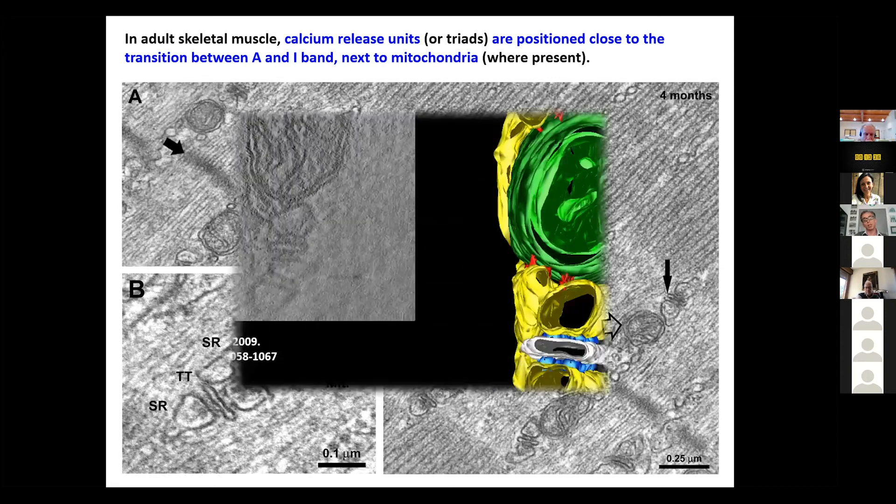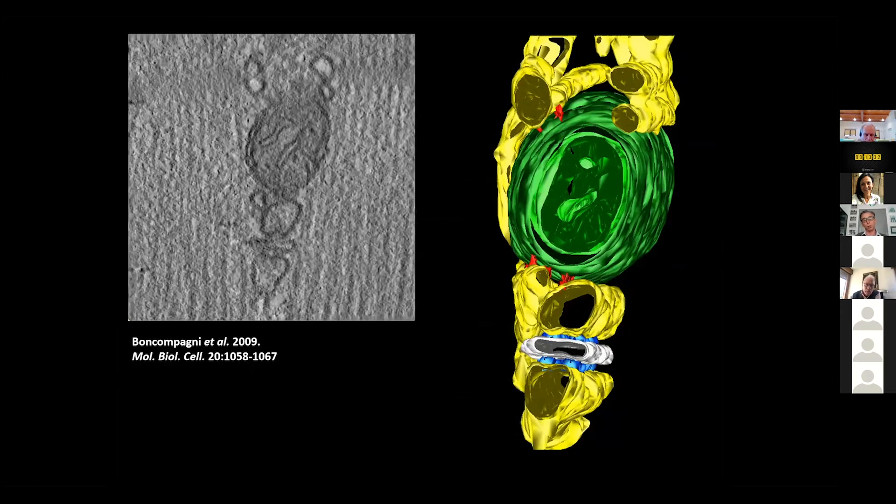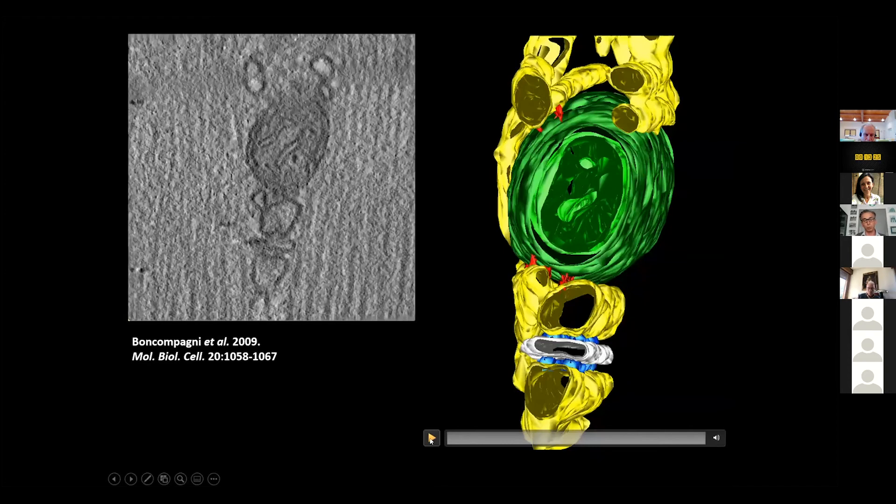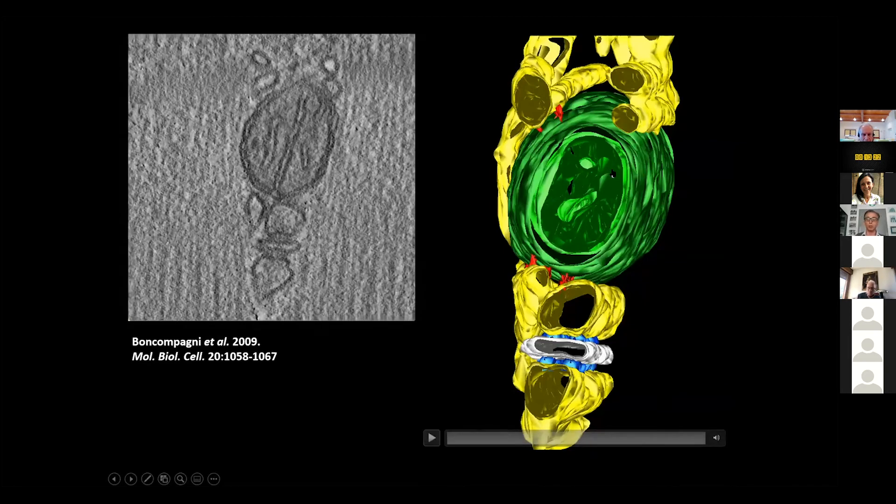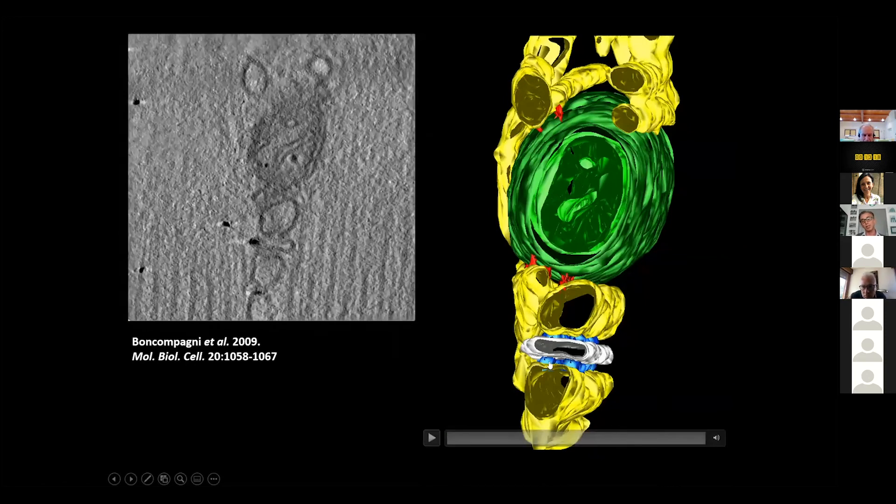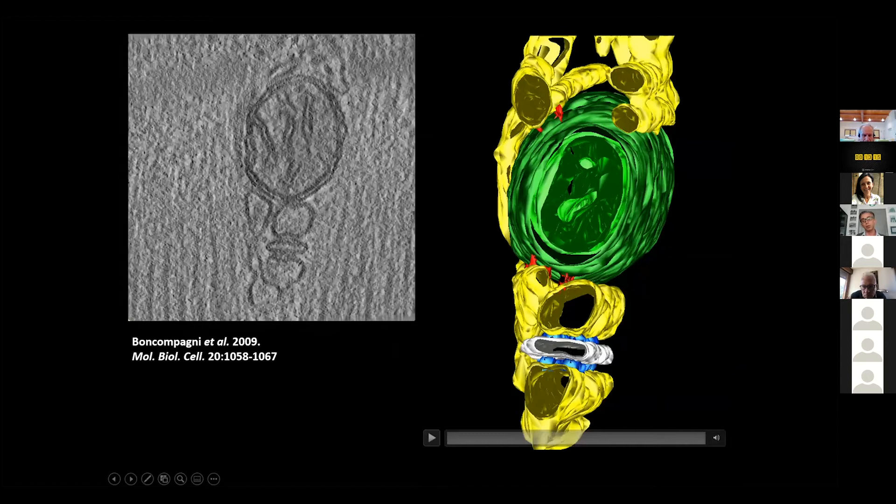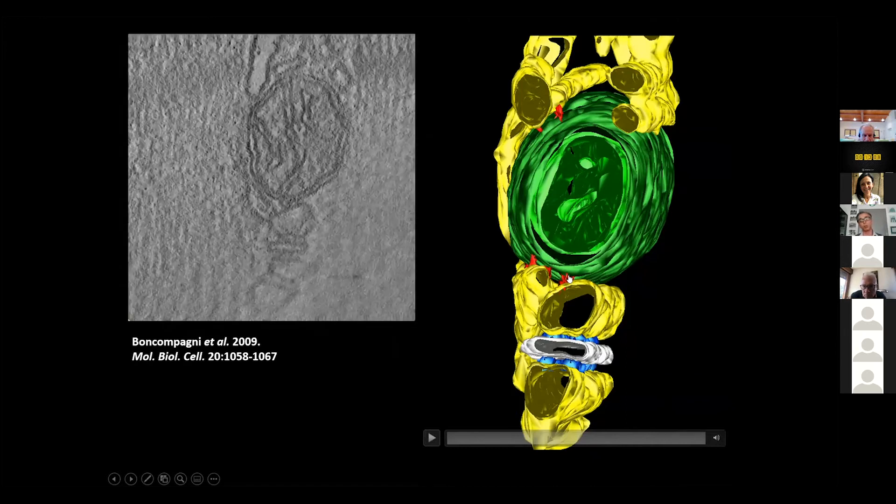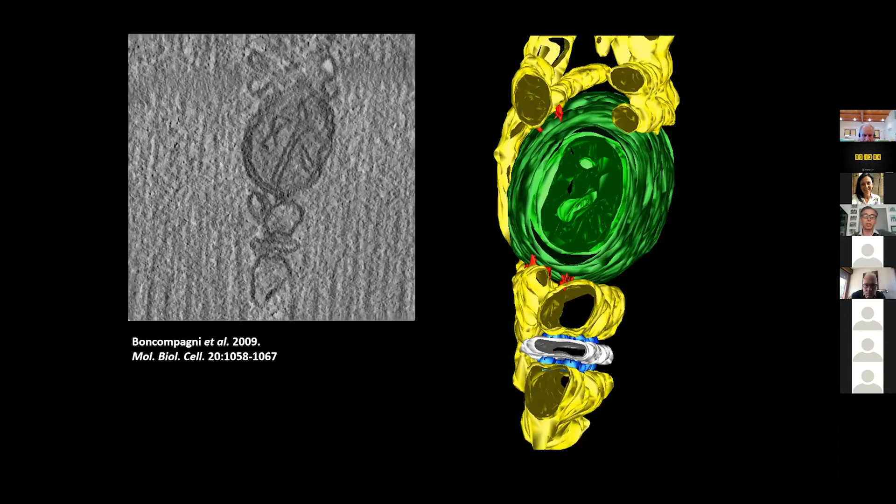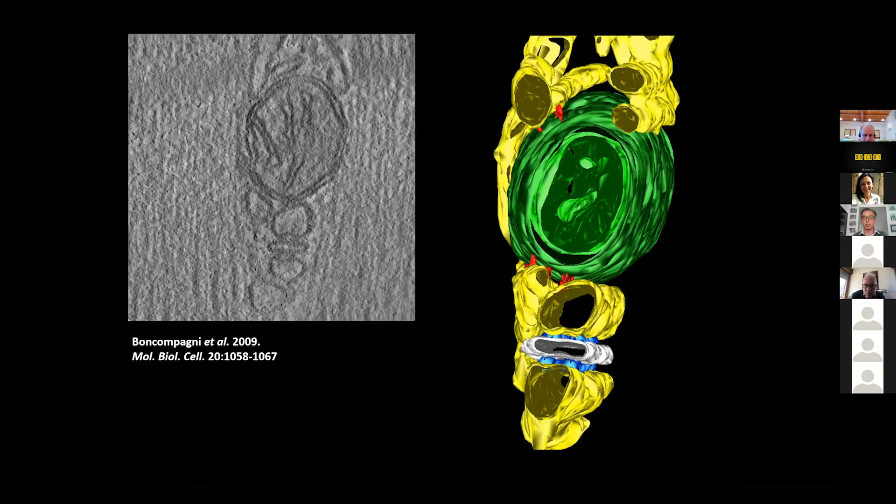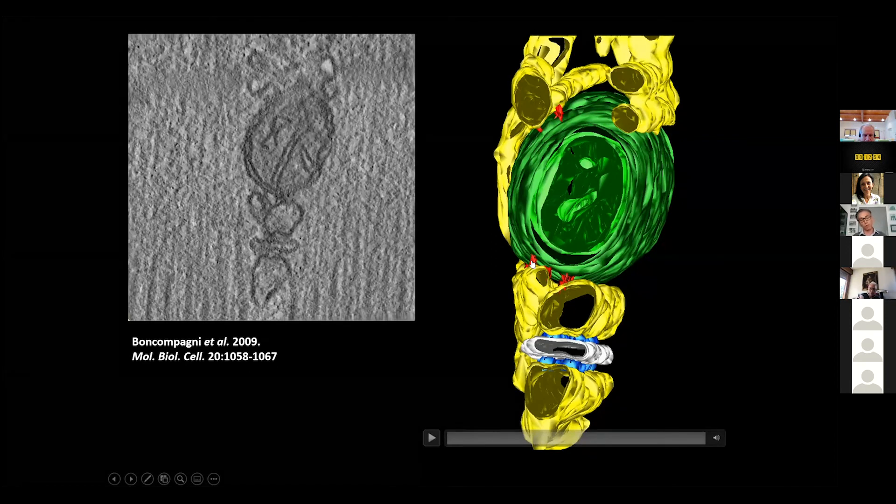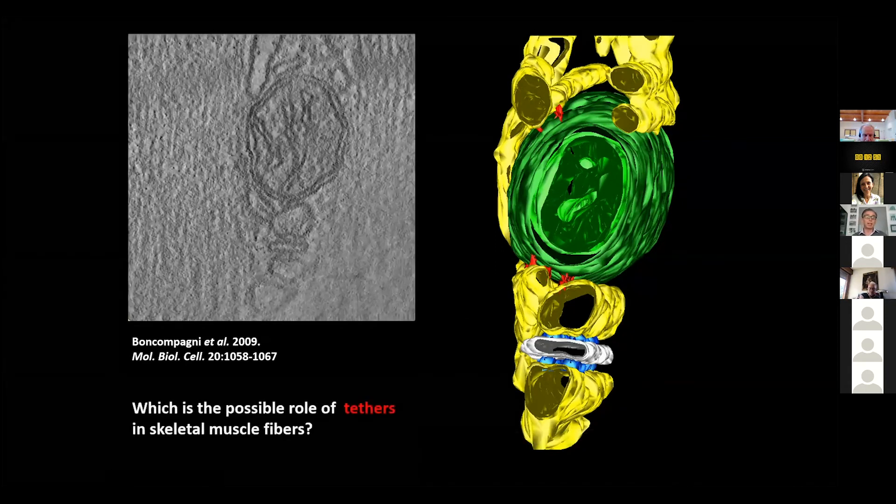In 2009, we published this paper in which we were able to publish this beautiful 3D reconstruction in which you see one triad here in cyan, the ryanodine receptor in white, the transverse tubule, the SR, and the mitochondria is linked to the triad by these little strands that here are represented in red. At the time, we named them in the paper tethers, because already in non-muscle cells, similar structures were named tethers. We are not sure about the molecular identity of these little strands yet. However, we tried to get some indirect indication of what could be the possible role of tethers in skeletal muscle.